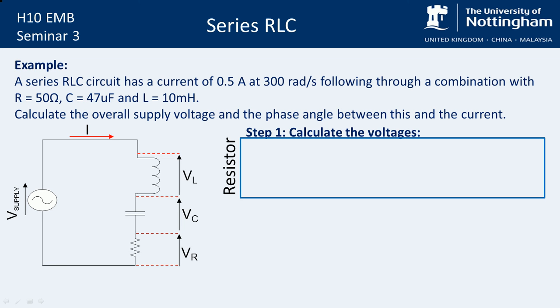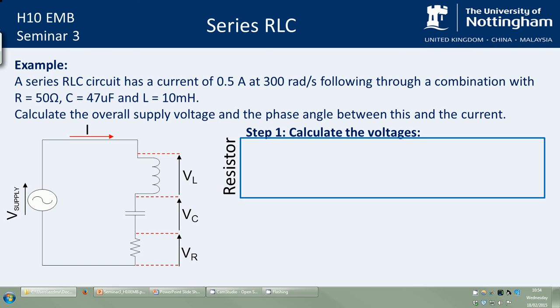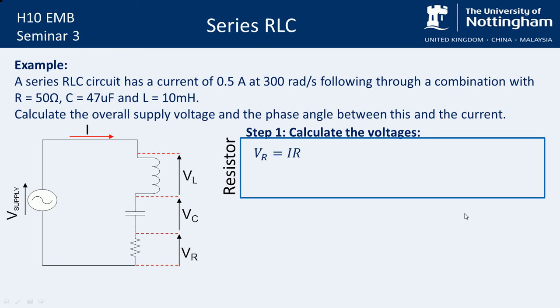So we're going to do the resistor first because that's nice and easy. So for the resistor, we know, as always, Ohm's law, it's just V is equal to I times R. We can calculate Vr easily because we know the value of the current and we know the value of the resistor because that's also given in the question. So this gives us 25 volts, which we can also write in phasor form to be a magnitude of 25 at an angle of 0 degrees, still in volts. So remember, this is 0 degrees from the current.